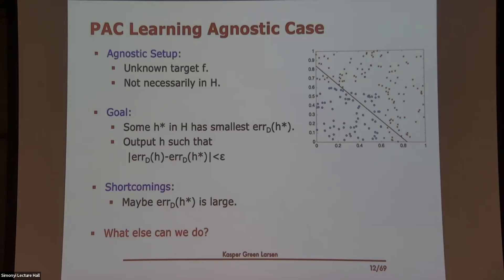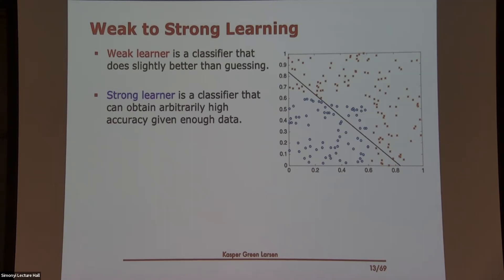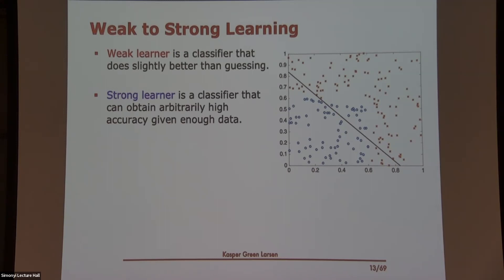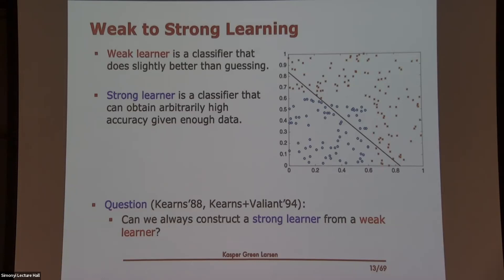The last classic approach to handling this is called weak to strong learning. A weak learner is a classifier that's a little bit better than guessing — it gets more than 50% of the data correct. Formally, it does a little bit better than guessing. A strong learner is a classifier that can achieve arbitrarily high accuracy as long as you give it enough training data — similar to the realizable setup. The classic question is whether we can always construct a strong learner from a weak learner, using a weak learner as a black box.